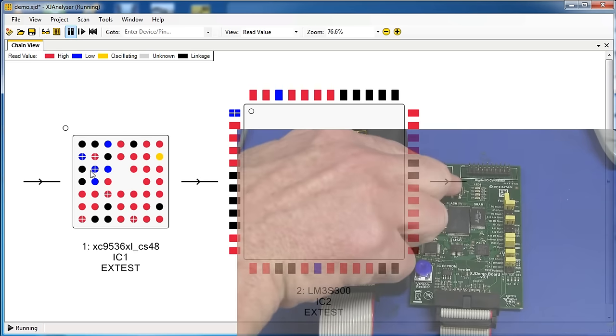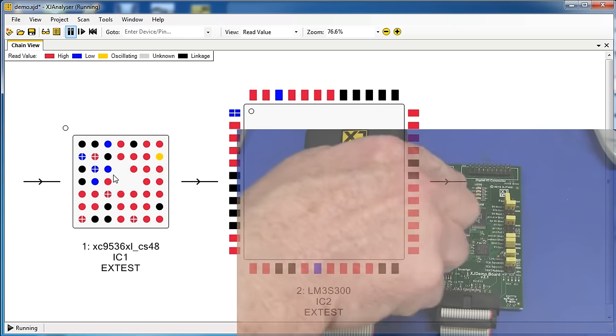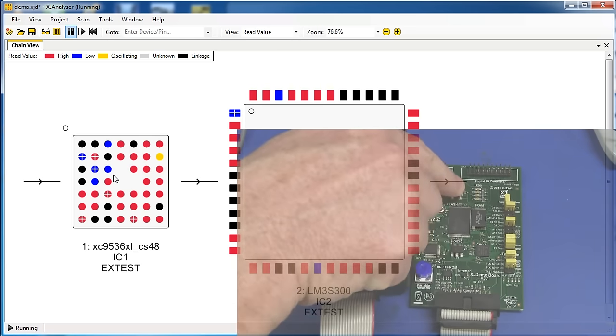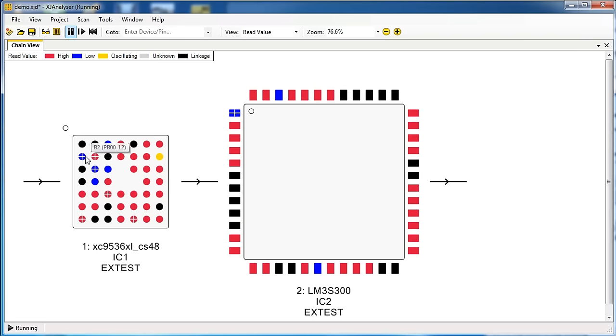Now, look what happens if I press this button here. Here we go. Look at that. There's a pin on this CPLD. The button's obviously connected to C3 there. And if I press that, there we go. It goes high, low. And if I continue to press it, it tells us that it goes yellow to tell us that it's oscillating.